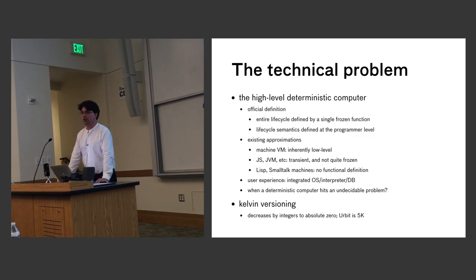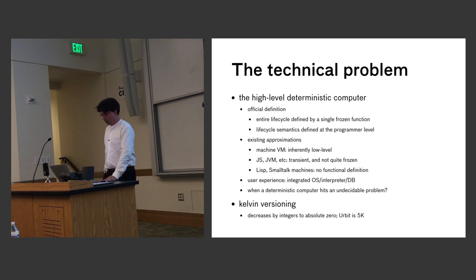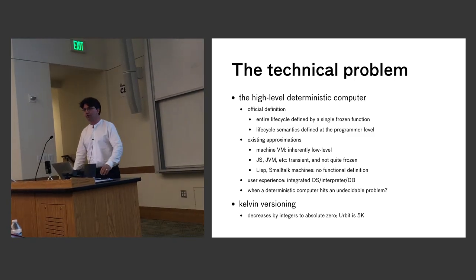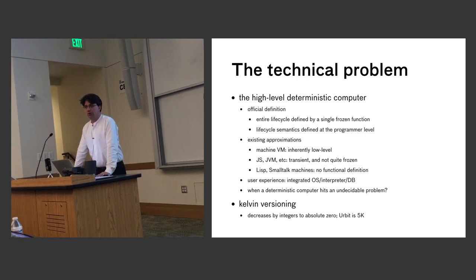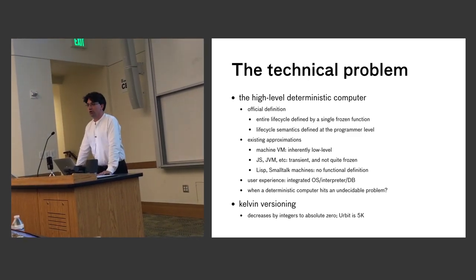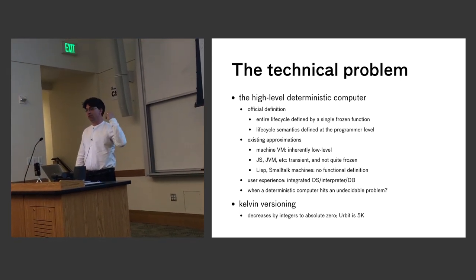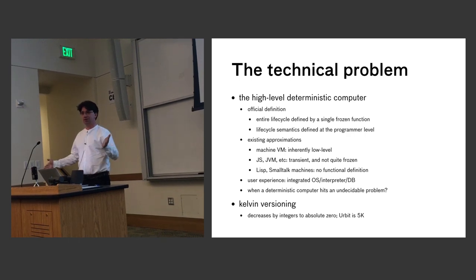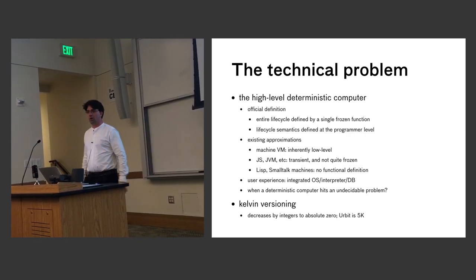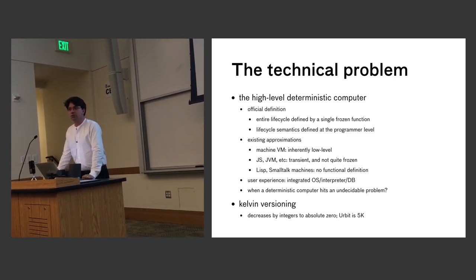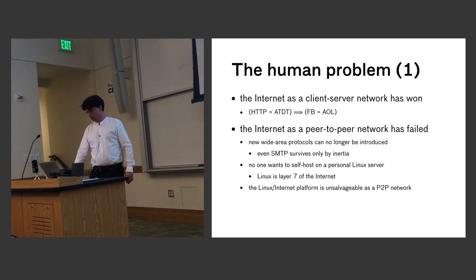When you're using this thing, it basically feels like an integrated interpreter, OS, and database — a very unusual feeling for a programming environment. You might also ask what happens when a deterministic computer hits an undecidable problem. One way to define this problem is with what I call Kelvin versioning, where you count down to absolute zero by integers. Absolute zero is absolutely frozen. Urbit's formal definition, which fits on a T-shirt, is currently at 5 Kelvin — like liquid helium.